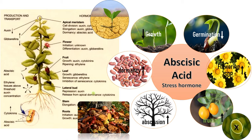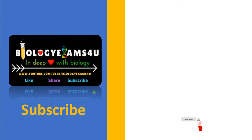Abscisic acid and ethylene together control abscission — the natural detachment of ripened leaves and fruits from the plant. That concludes our discussion on plant hormones. Thank you for your support; if you found this video useful, please subscribe to this channel.